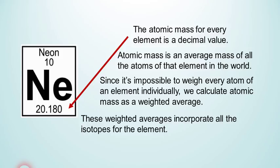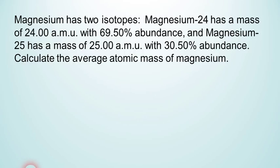So, the way we calculate this as a weighted average, well, we have to know the mass of each isotope. We also need to know what percentage of the atoms are made up by that isotope. So, let's work an example. Let's take this example. Magnesium has two isotopes. Magnesium-24 has a mass of 24.00 atomic mass units with 69.50% abundance. And magnesium-25 has a mass of 25.00 atomic mass units with 30.50% abundance. Calculate the average atomic mass of magnesium.